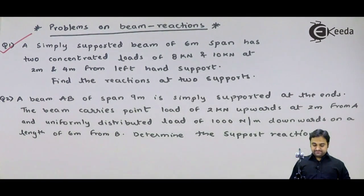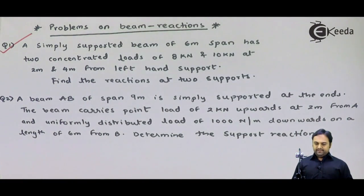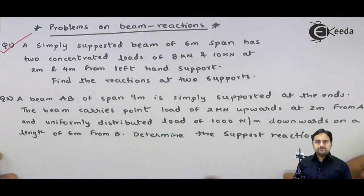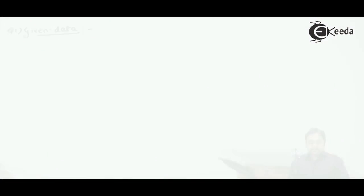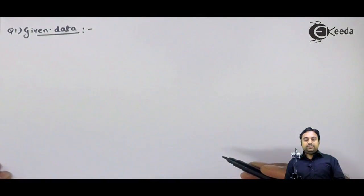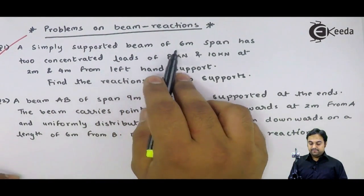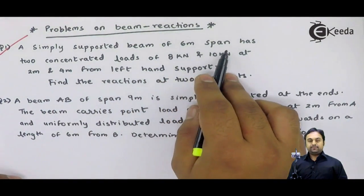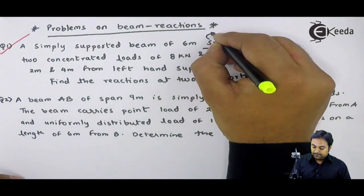They have not given us any diagram, so I will be using the data provided to draw the diagram. It is given that we have a simply supported beam of 6 meter span — span means the length of the beam, so it is 6 meters in length.